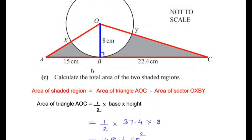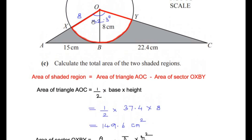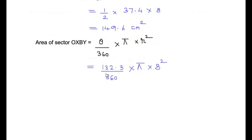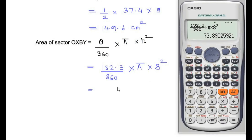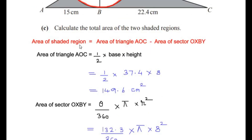Now let us find the area of the sector using the formula (θ / 360) × πr², where θ is the central angle found in part (a) as 132.3 degrees, and r is the radius of 8 centimeters. Substituting: (132.3 / 360) × π × 8², which gives us a value of 73.89 centimeters squared.